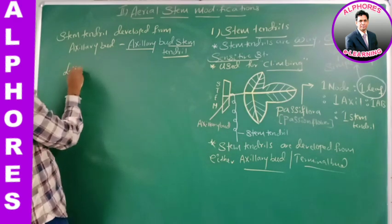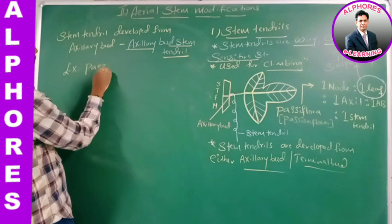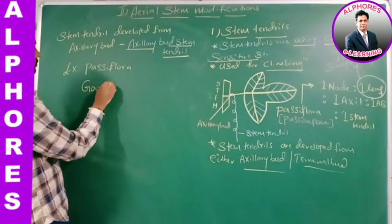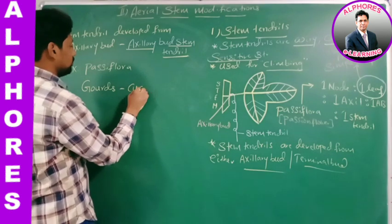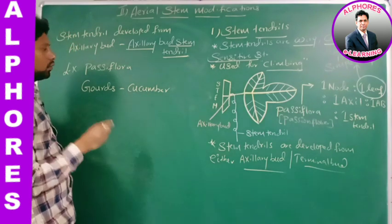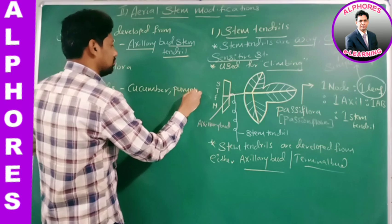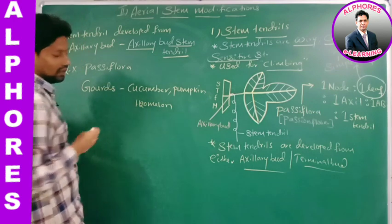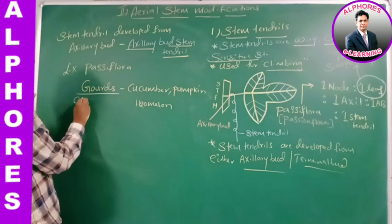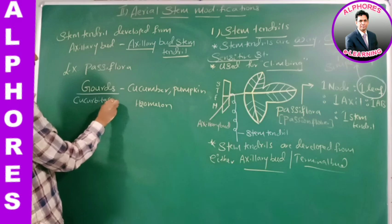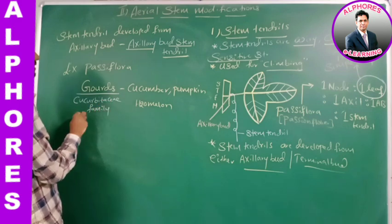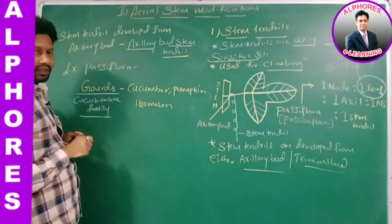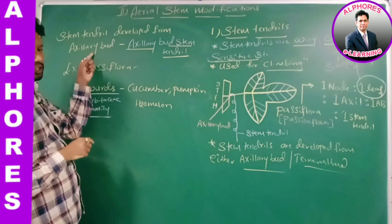Examples of axillary bud stem tendril: first, Passiflora (passion flower). Second example is gourds — a common name for the Cucurbitaceae family, which includes cucumber, pumpkin, and watermelon. In Passiflora, cucumber, pumpkin, and watermelon, the stem tendril is developed from the axillary bud.